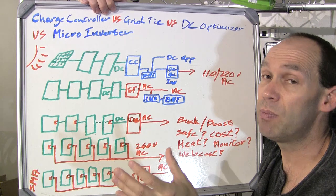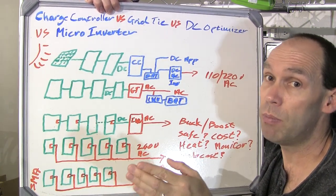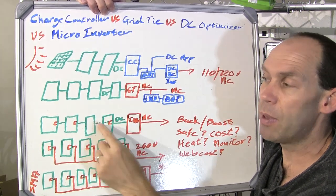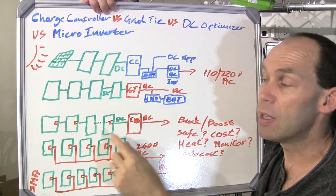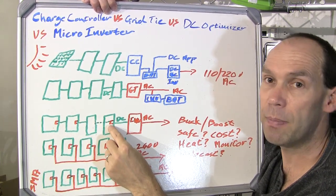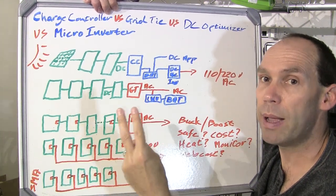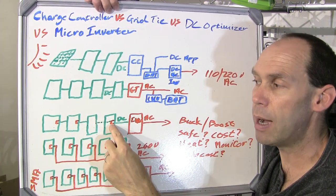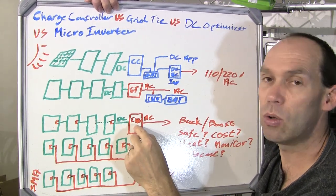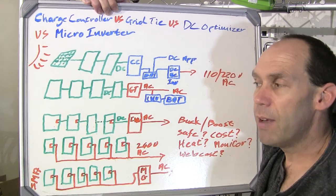Micro inverters generally are going for $100 to $250 per panel. Also, in some optimization solutions you can tie two solar panels to a single optimizer. You obviously lose a little benefit in that both panels are controlled by a single optimizer, but it's better than having a whole string controlled by a single charge controller, and it does allow some design flexibility.